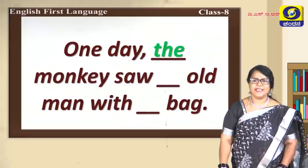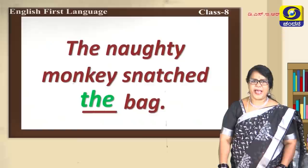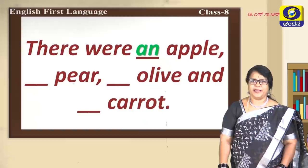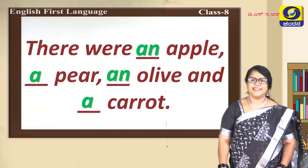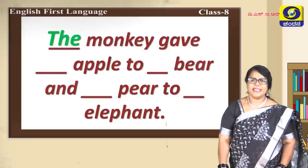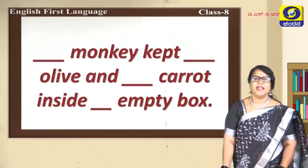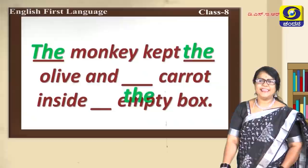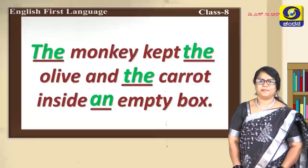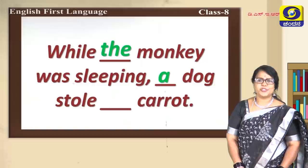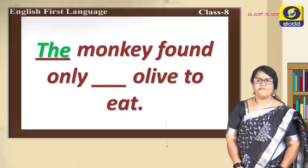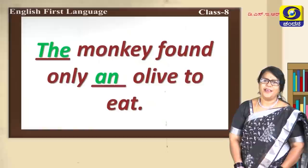One day the monkey saw an old man with a bag. The naughty monkey snatched the bag. There were an apple, a pear, an olive, and a carrot. The monkey gave the apple to a bear and the pear to an elephant. The monkey kept the olive and the carrot inside an empty box. While the monkey was sleeping, a dog stole the carrot. The monkey found only an olive to eat.